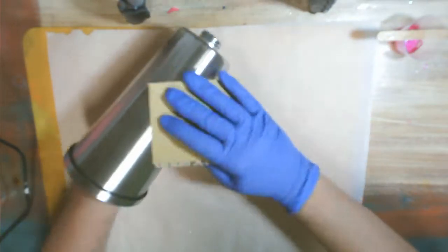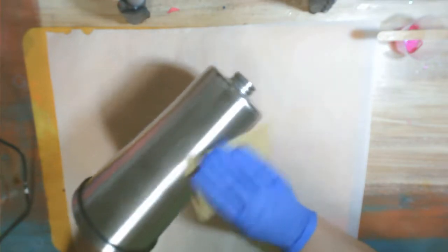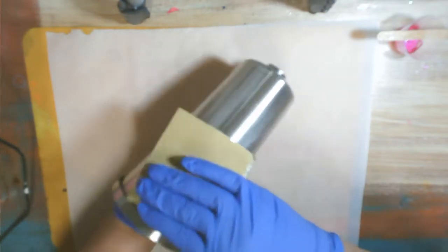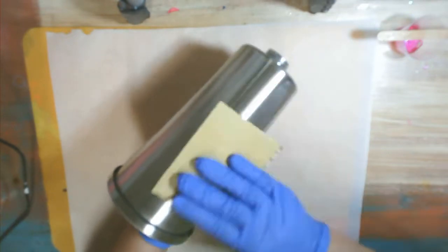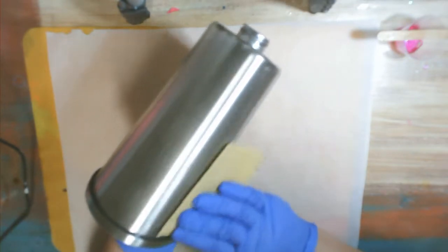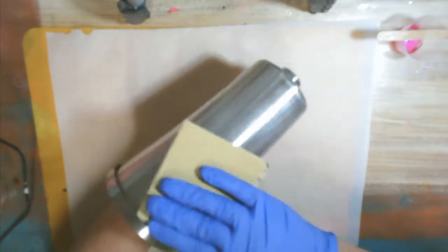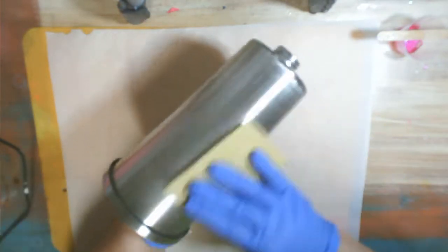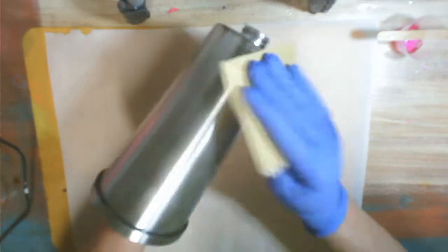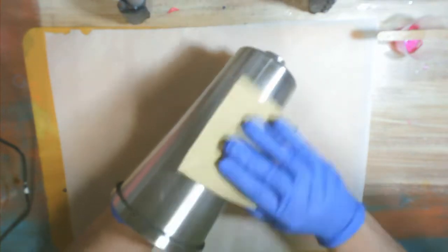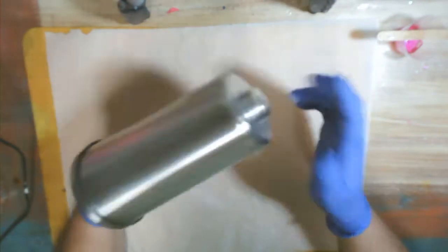We'll get it sanded down and then I will clean it with some Dawn dish soap, and then we'll tape off our top and our bottom. I'm using this kind of rough sandpaper and I just want to scuff the surface of the tumbler just enough that when I put the resin on it, the resin will have something to grip onto.